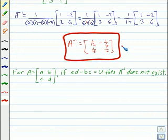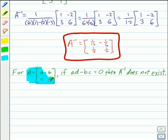Now let's finish up by talking about this special note. For any matrix in the form ABCD, if the product of A times D minus the product of B times C is equal to 0, then the inverse does not exist. So look out for this special situation when you're working out your problems.